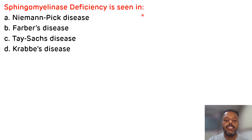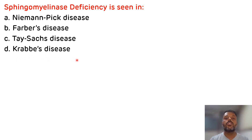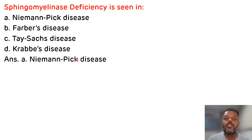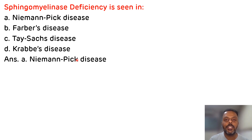Fifth question: sphingomyelinase deficiency is seen in which of the following? The options are Niemann-Pick disease, Faber's disease, Tay-Sachs disease, and Krebs disease. Sphingomyelinase deficiency is seen in Niemann-Pick disease. The correct answer is A. That is all about phospholipids. Thank you for watching.